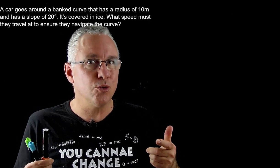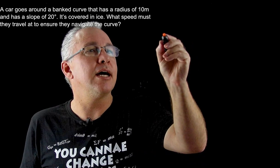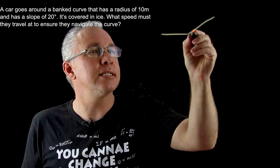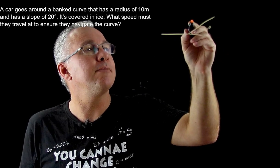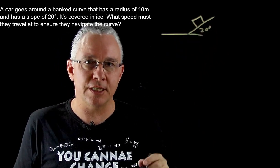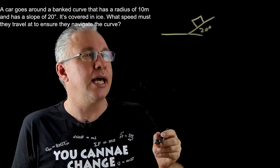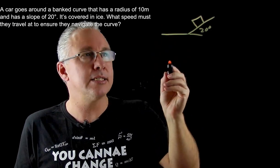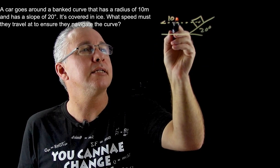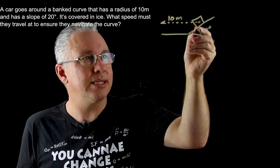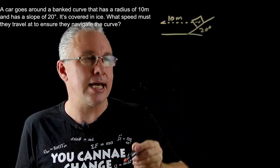First thing we do of course is draw the diagram. We have a banked curve like this and we know that this is equal to 20 degrees. We have my car and being a good physicist I make boxes out of everything. We know that the radius here is 10 meters. So this distance here to the car is going to be 10 meters. That's assuming that's where we want the car to stay.